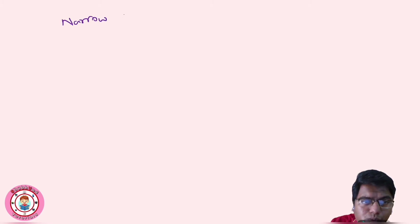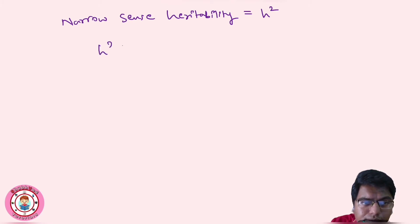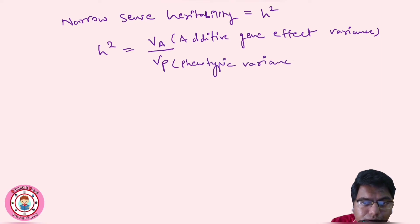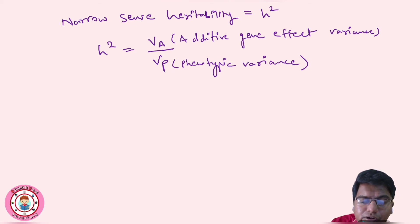The next part is narrow sense heritability, denoted by small h-square. Here, the formula is Va upon Vp — that is additive gene effect variance divided by phenotypic variance. So narrow sense heritability focuses only on the additive genetic effect.